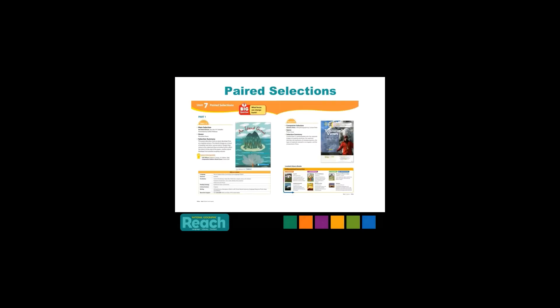Now that you have a better understanding of how to launch a unit with Reach, let's take a quick look at the instructional path for grades 1 through 5. Instruction in each unit is broken down into two parts after the unit launch. Each of these two parts includes paired reading selections — a main selection and a companion selection. The example from grade 3 includes a narrative poem and a National Geographic photo essay. Using paired selections supports students to understand and analyze across genre.